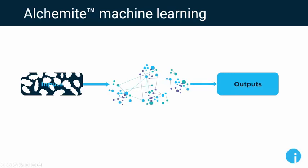This type of sparse experimental data is ubiquitous and very difficult for typical machine learning approaches to handle. For a normal algorithm, if you tell it you're going to give it X, Y, and Z as input, you better actually give it X, Y, and Z — otherwise it gets confused. Alchemite's approach is different: it takes the data that is provided, learns from it, and works around the data that isn't available.